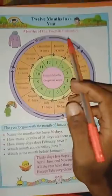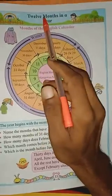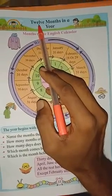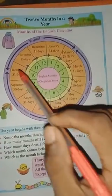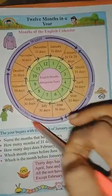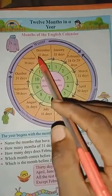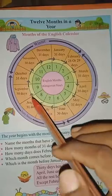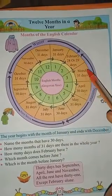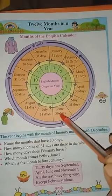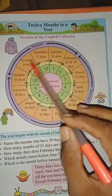Good morning everyone. Today we are going to study Math of Standard Second. The new topic is the 12 months in a year — the English calendar. We have 12 months in a year: January, February, March, April, May, June, July, August, September, October, November, December.